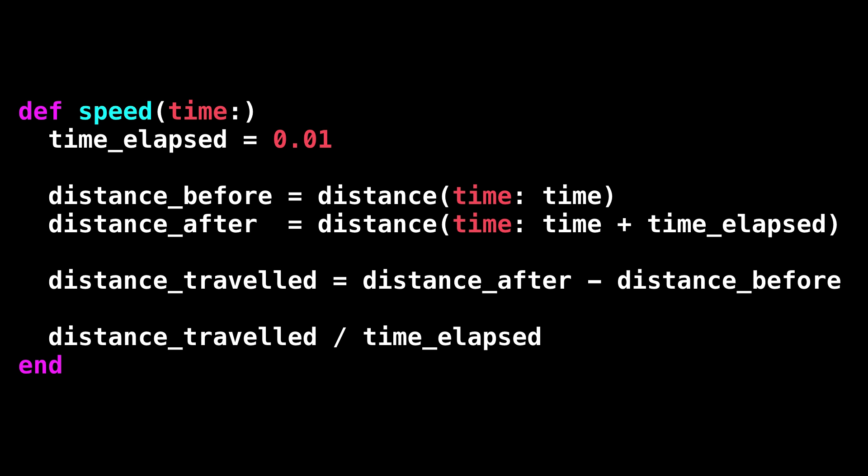So here's how we implement that. To get the rough speed at a particular time, we pick a really short amount of time, say 0.01 seconds, then calculate how much further the car travels in that time, and divide that distance by the amount of time elapsed. We don't need to reimplement this for every function we want to differentiate, we can make a higher order function to do it, or do it with metaprogramming or whatever.